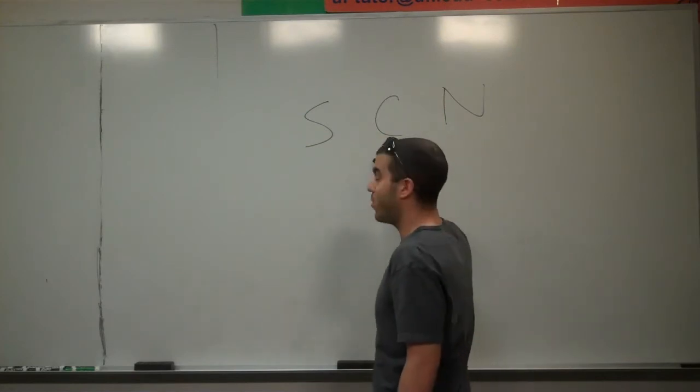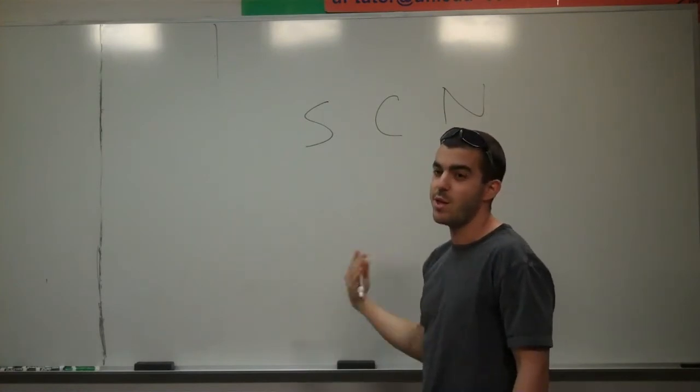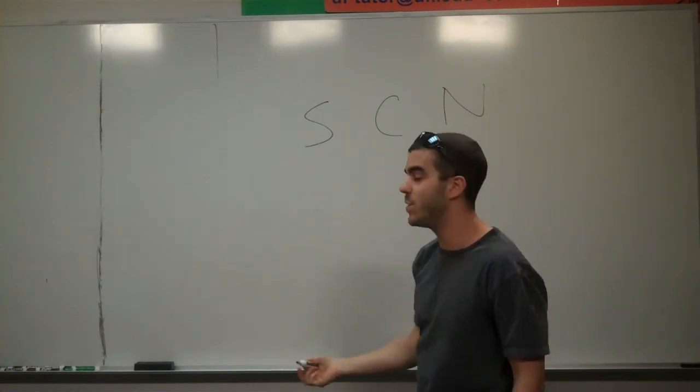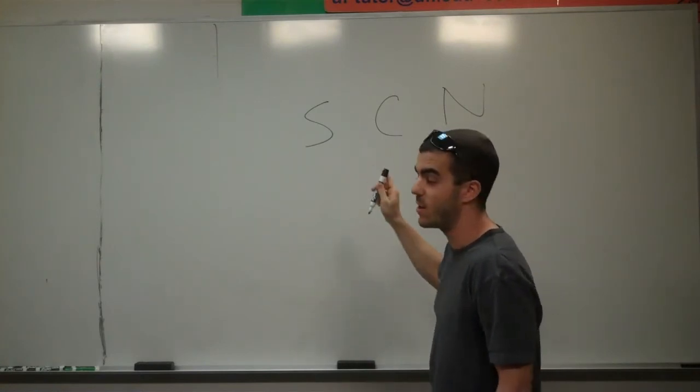You also remember that carbon has a maximum of four bonds and that nitrogen can have a maximum of eight electrons, either in lone pairs or in bonds. Typically, nitrogen won't have more than two lone pairs at any given time.